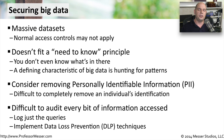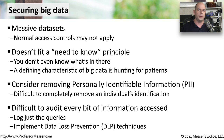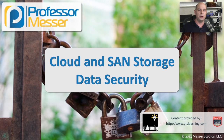This might also prompt you to implement DLP — data loss prevention — into your environment. A DLP device sits on the network and watches for information to flow over the network. If it notices information that should not be transferred, like social security numbers, credit card numbers, or healthcare information, it can filter out, limit, or alert when those particular pieces of information are transferred across the network. By utilizing some of these data security strategies for your cloud data, your SAN, and your big data, you can be assured that the information you're storing and querying is going to be as secure as possible.